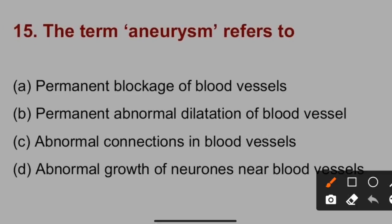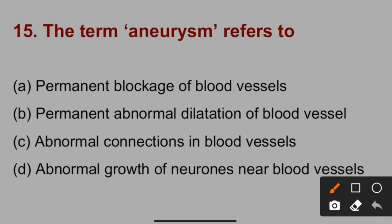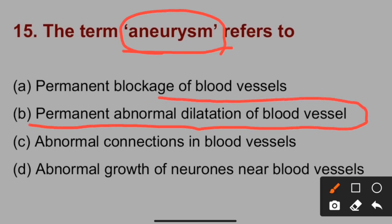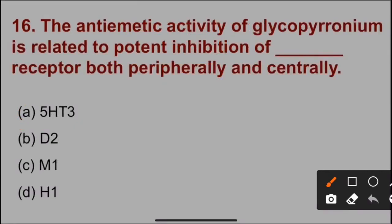Question number 15: The term aneurysm refers to a permanent abnormal dilatation of a blood vessel. When this is observed, the condition is called aneurysm — aneurysm is a permanent abnormal dilatation of the blood vessels.